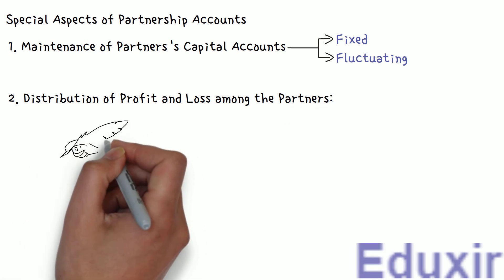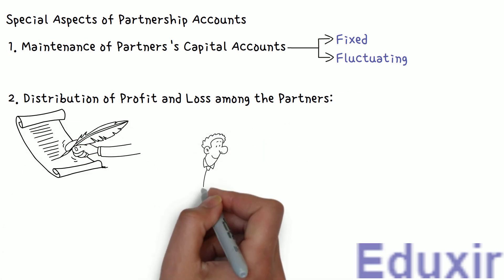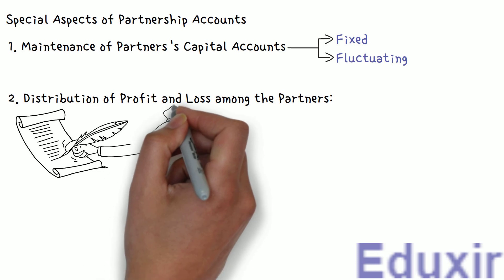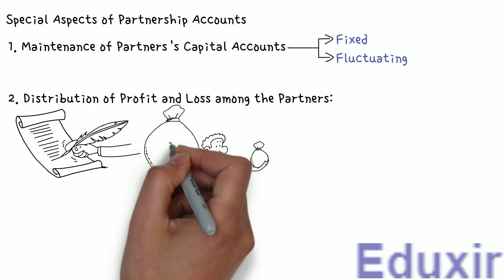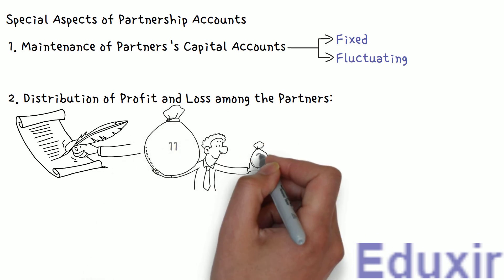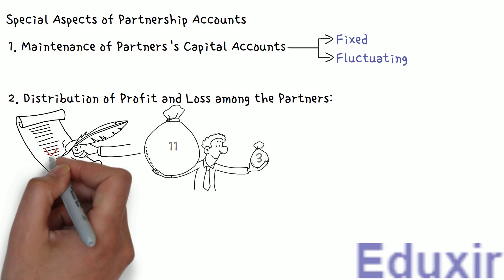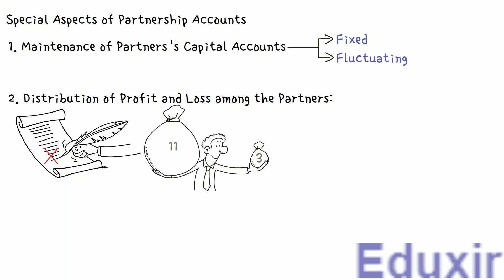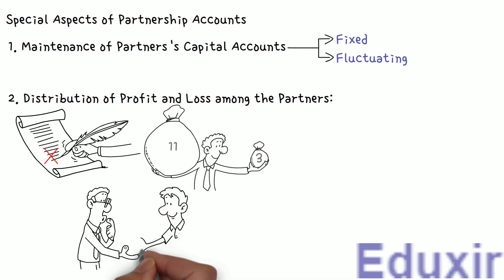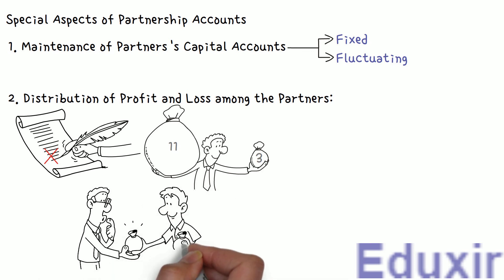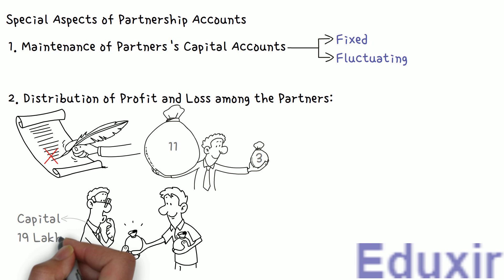When the partnership agreement is made, the ratio in which the profits or losses of the firm should be distributed among the partners will be included in the partnership deed. If the partnership deed is silent about this aspect, then the profits or losses should be shared equally by all the partners, irrespective of the capital amount contributed by them.